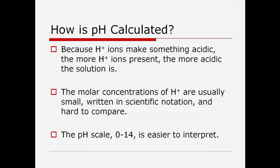So how do we actually calculate pH? Because hydrogen ions make something acidic, the more hydrogen ions there are the more acidic it is and the pH would be lower. The molar concentrations of hydrogen are usually really small numbers, like 2 times 10 to the negative fifth molar, and they're just hard to compare. So we're going to take that concentration of the hydrogen ion, do something to it, and put it into the pH scale — it just makes it easier to interpret.